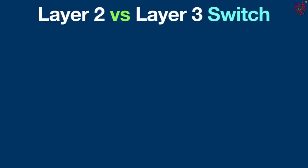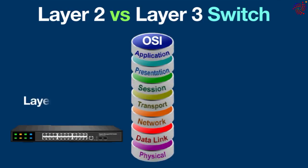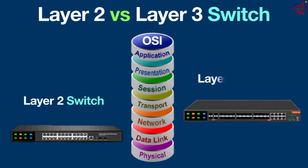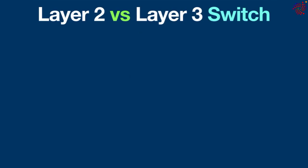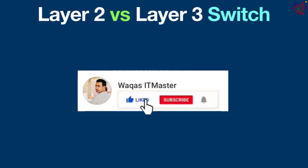Hello everyone. Today in this video we are going to compare layer 2 and layer 3 switches. According to the OSI model, a layer 2 switch works on the data link layer while a layer 3 switch works on the network layer. Choosing the right switch for your network comes down to one critical decision: should I use a layer 2 or layer 3 switch, and which type is best suited for my business network?